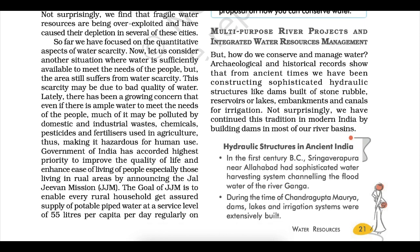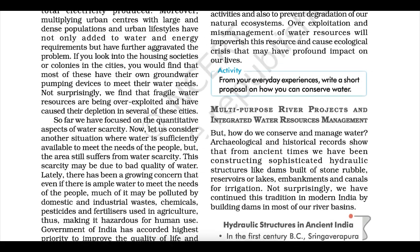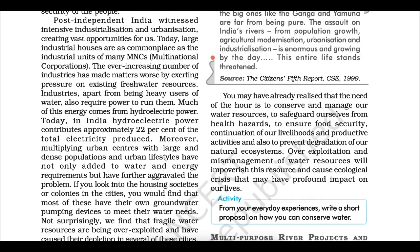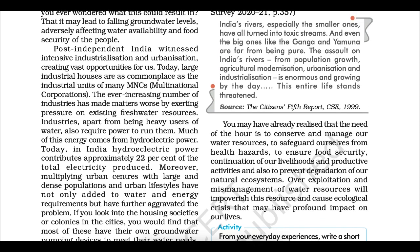Water is being polluted by chemicals, pesticides and fertilizers used in agriculture, making it hazardous for human use. The Government of India has accorded highest priority to improve quality of life, especially in rural areas, by announcing the Jal Jeevan Mission. The goal of JJM is to enable every rural household to get a piped supply of portable water at a service level of 55 litres per capita per day on a long-term basis.